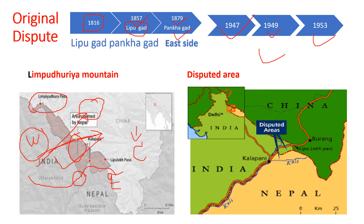You can see on the map the actual disputed area between India and Nepal. India is saying this area belongs to them, while Nepal is claiming the west area. Nepal has not claimed the entire area shown on the broader map — only a specific portion. India has stated that the east of the Kali River belongs to Nepal, which has been the established position. Both countries are concerned, and the primary factor behind this dispute is China.